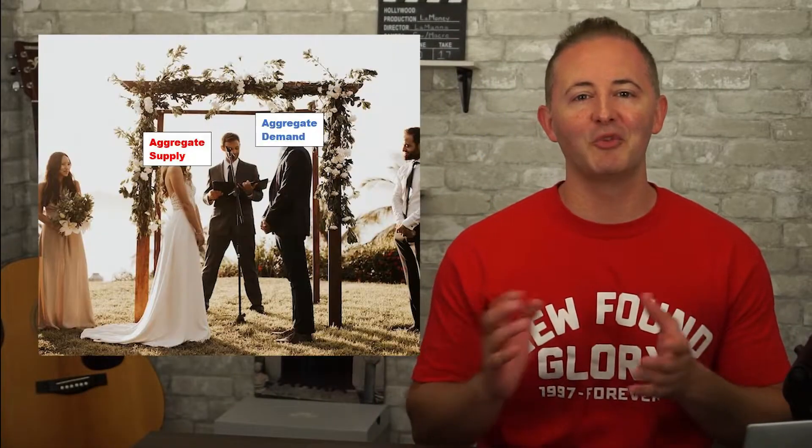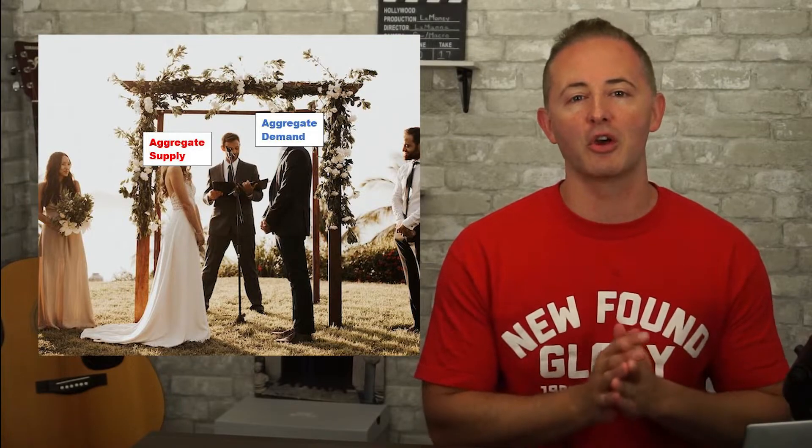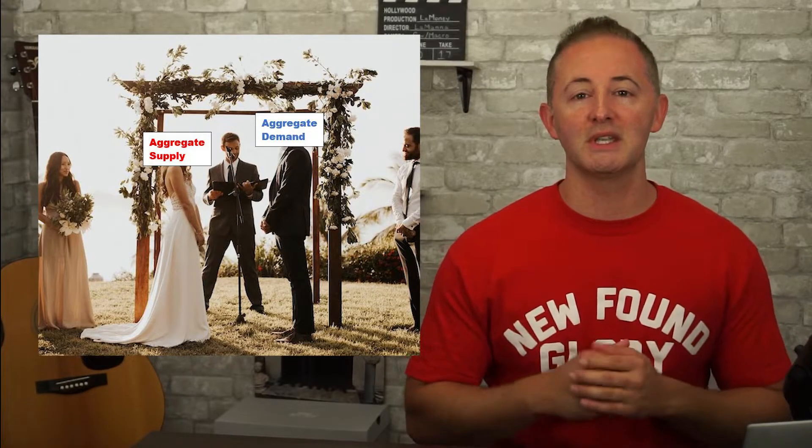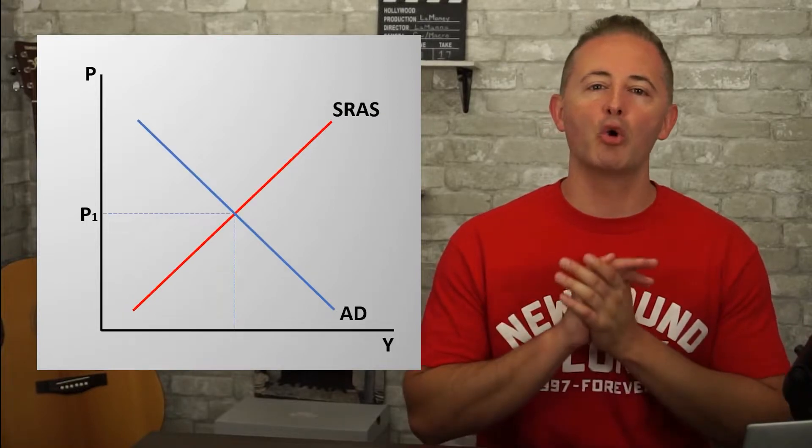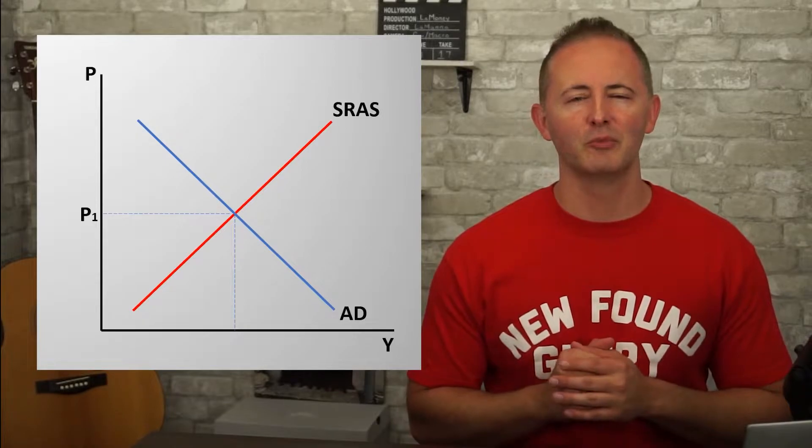Alright, dearly beloved, we are gathered here today to witness the joining together of the aggregate demand curve, which represents total spending in an economy, be it consumer, investment, government, or net exports, and the short-run aggregate supply curve, which represents total production in an economy into wholly equilibrium, or at least short-run equilibrium. Okay, enough of that. But yeah, that's basically the first idea.